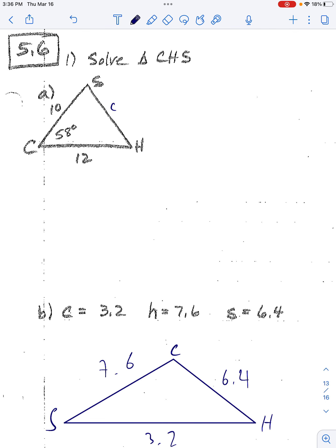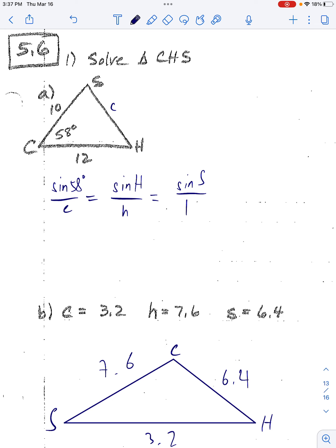They want us to solve triangle CHS. So we've got to find little c, big angle S, and big angle H. So they gave you — let's set up the law of sines. Sine big C over little c equals sine big H over little h, which equals sine big S over little s.